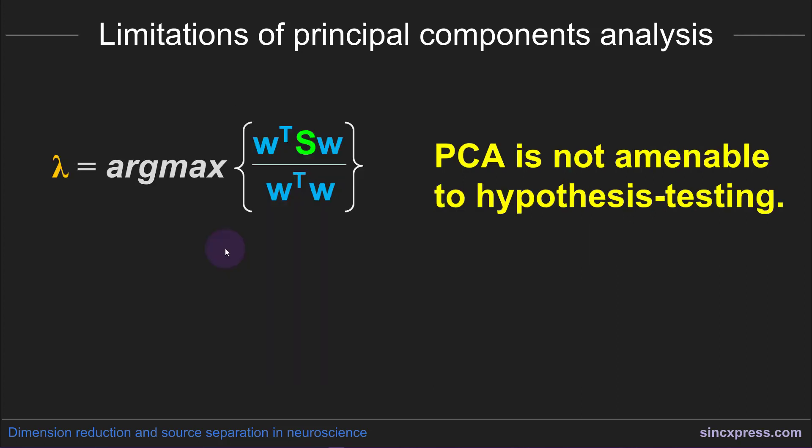This is related to the third limitation of principal components analysis, which is that it's not really amenable to hypothesis testing. Principal components analysis is designed to maximize this expression here—the quadratic form of the covariance matrix S. So what is the null hypothesis? It's an interesting question and it's not immediately obvious what the null hypothesis is here. I encourage you to pause the video and think about this for a little bit, or discuss it if you're watching this with other people, and try to figure out what is the null hypothesis that PCA is testing against.